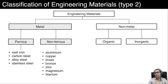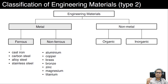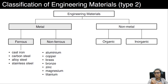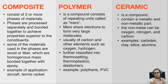For Type 2, engineering materials are divided into metal and non-metal. Under metals, ferrous materials include cast iron, carbon steel, alloy steel, and stainless steel. Non-ferrous materials include aluminium, copper, brass, bronze, zinc, magnesium, and titanium. Non-metal materials are further divided into organic and inorganic types.